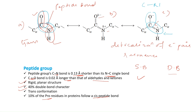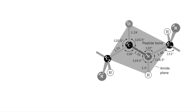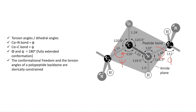So a peptide bond connects two amino acids and has partial double bond character. The angles formed by rotation around C–Cα are known as psi (ψ), and the angles formed by rotation around N–Cα are denoted by phi (φ). These angles are known as torsion angles or dihedral angles.